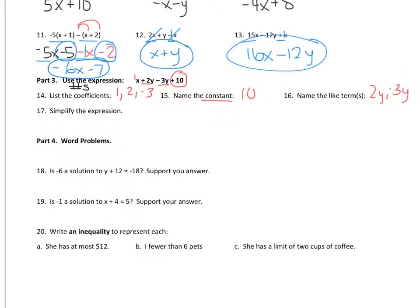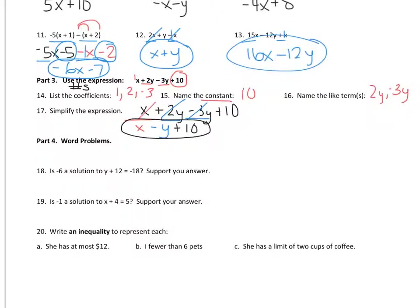The last part is to simplify it. So rewriting it: x plus 2y minus 3y plus 10. To simplify, you want to combine like terms and go in alphabetical order. There's an x — cancel it. There's a 2y and a negative 3y: 2 minus 3 is negative 1, or negative y — cancel, cancel. And I'm left with the constant. I can't combine these anymore because there are no more like terms.